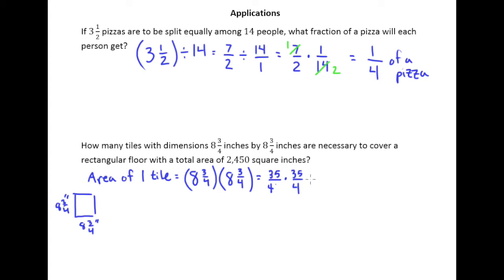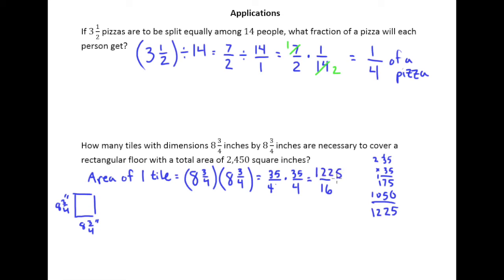We can go ahead and say 4 times 4 is 16, and then 35 times 35 — we'll do a little bit of long multiplication for that. The result is 1,225, so the area of one tile is 1225/16 square inches.